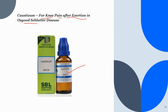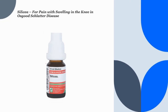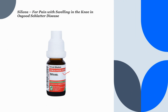The next homeopathic medicine is Silicea. Silicea is indicated for Osgood-Schlatter disease where there is knee pain with intense swelling over the knee. The pain in the knee may be tearing or stitching in nature. The knee is painful to pressure and there is a sensation as if the knee is very tightly bounded.